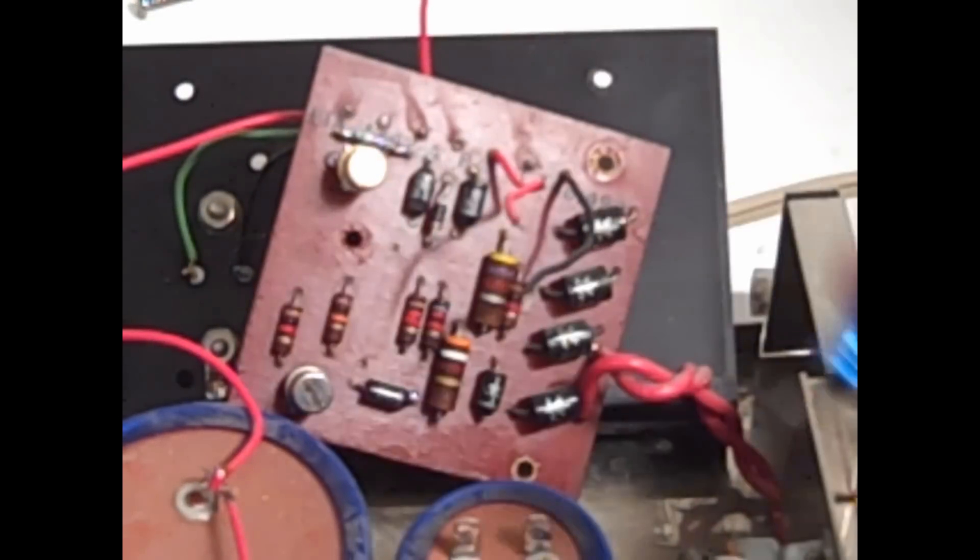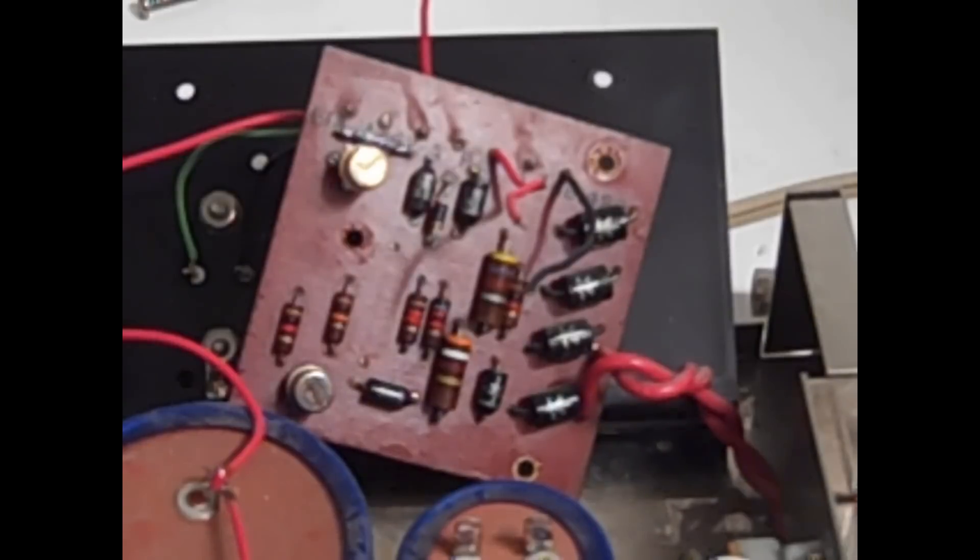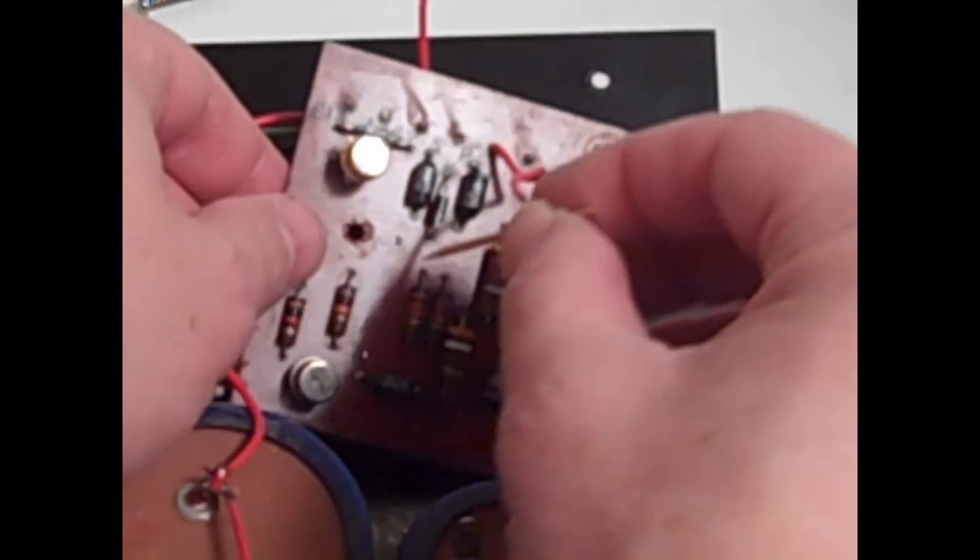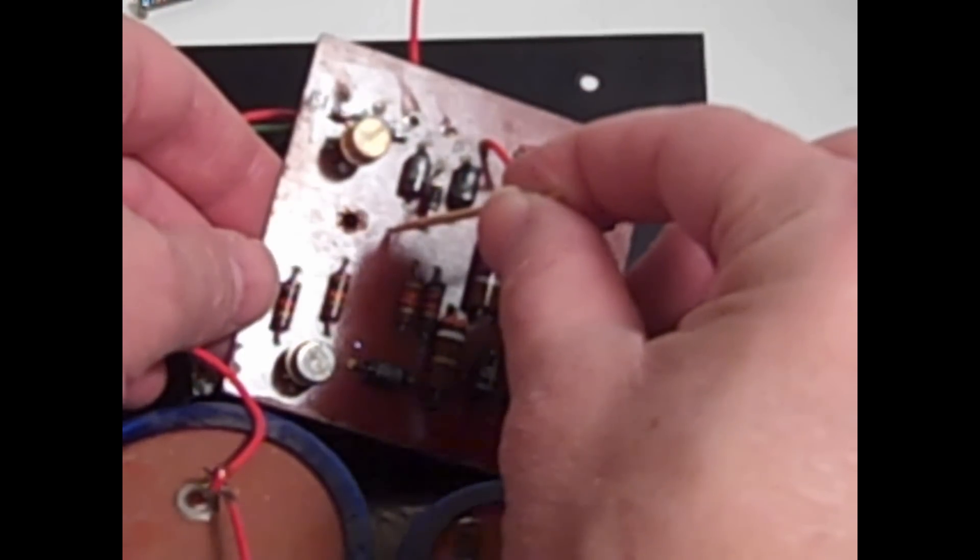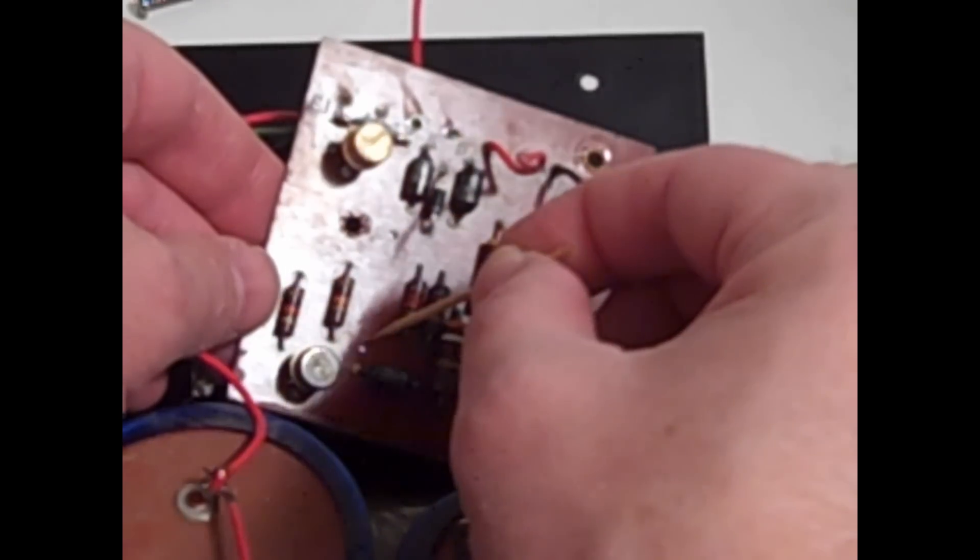So that capacitor is now gone. We've just got to clear those two holes. And to clear those two holes I like to use the toothpick trick. I'll show you. So for the toothpick trick, what we'll do is put a toothpick in from the front while we heat the hole from the back. And that will clear the hole of solder.